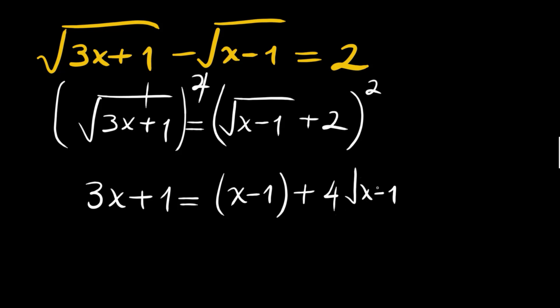Then we will have 3x, this x can be sent this way, we will have 2x, and this negative 1 plus 4 will be plus 3. And if we have this left hand side, it will be minus 3. Then we have 2x minus 2 is equal to 4 times root x minus 1.